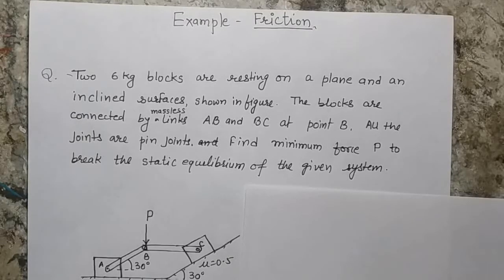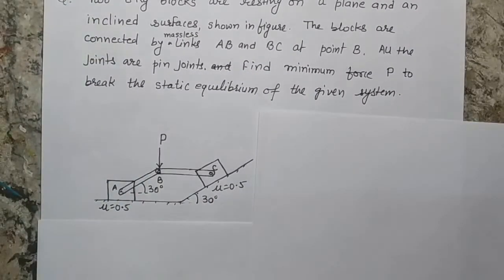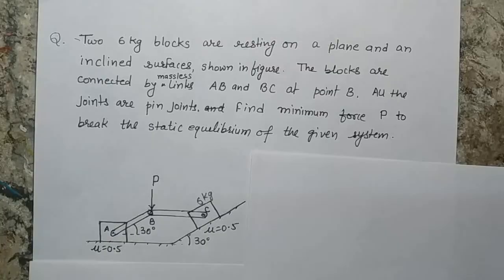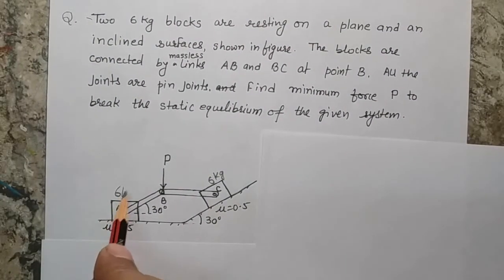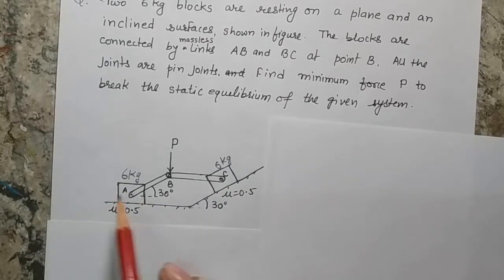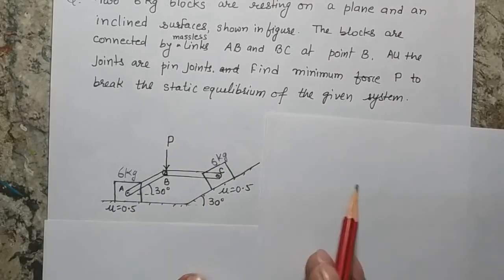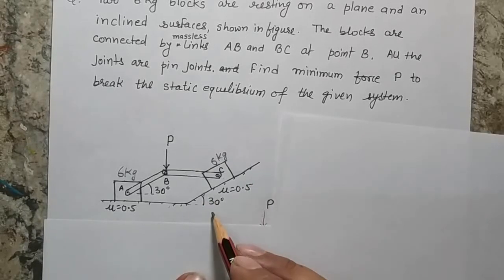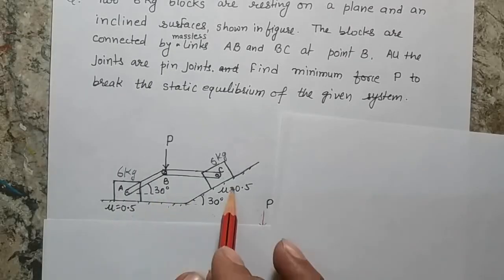An interesting problem includes friction as well as the distribution of forces through the rod. The problem states that there are two blocks, block A and block C, each of mass 6 kg, placed on two surfaces — one is a flat surface, another is an inclined surface having an angle of 30 degrees. The coefficient of friction between the block and the ground is 0.5 at both places.